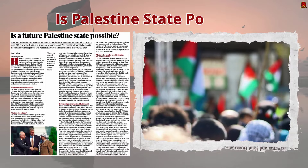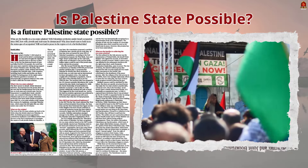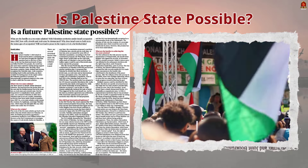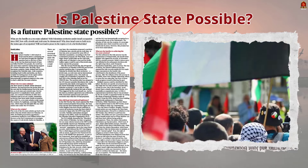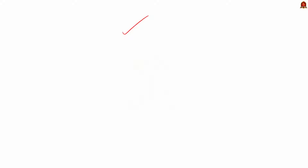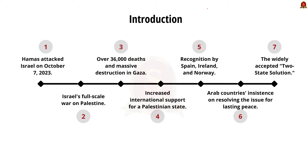Now let us move on to the news article discussion. This article speaks about the possibility of creating a new Palestine state to solve the Israel-Palestine issue. In our discussion, let us see the concept of the two-state solution and whether it is possible or not. First, let us summarize the events that happened last year. As you all know, Hamas is a militant organization in Palestine.